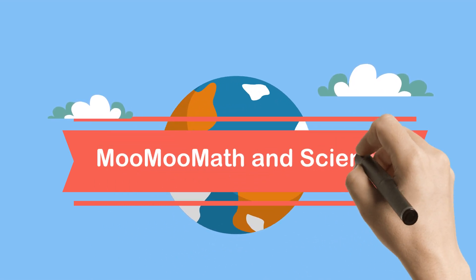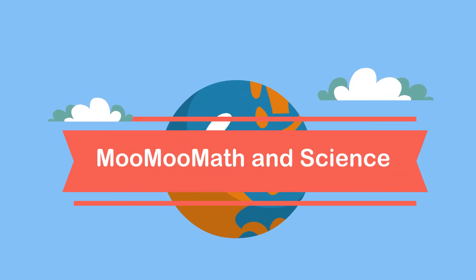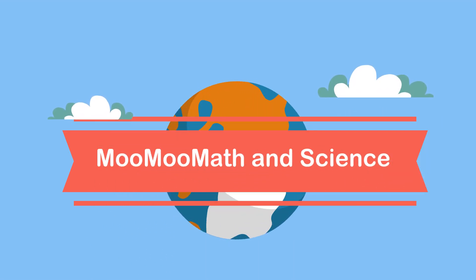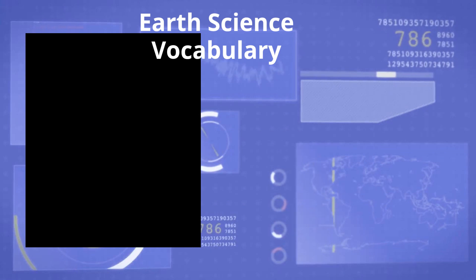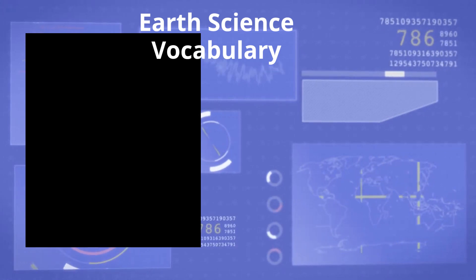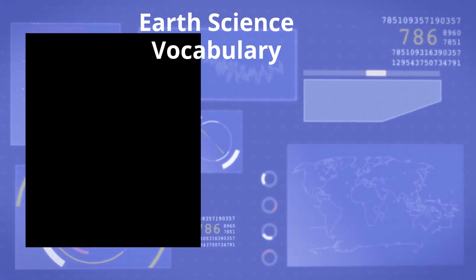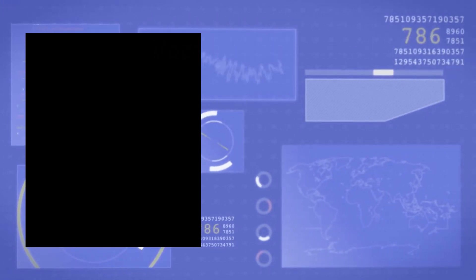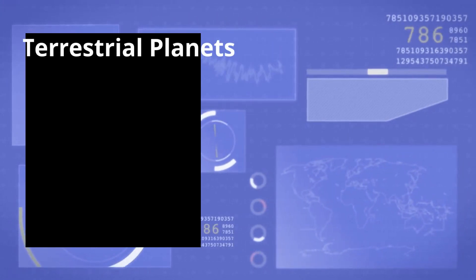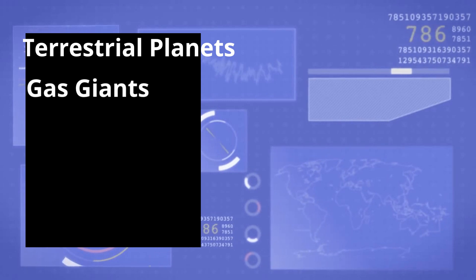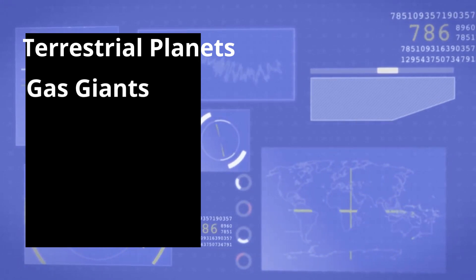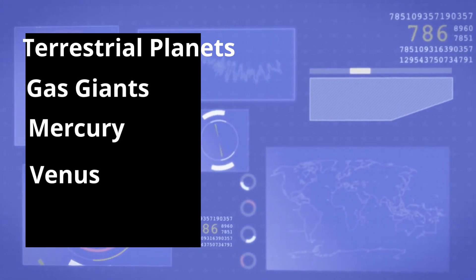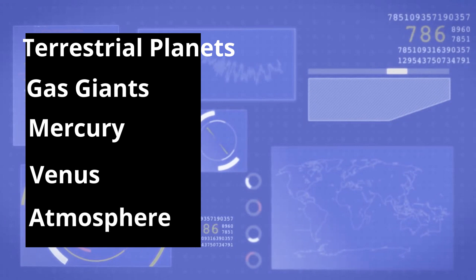Welcome to MooMooMath and Science, Earth Science Vocabulary Week 3. In this video, I will go over terrestrial planets, gas giants, Mercury, Venus, and atmosphere.